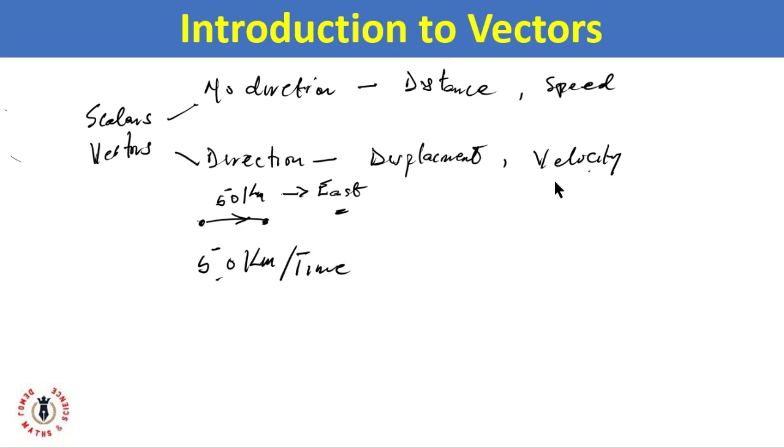While speed might measure the rate of change of distance with respect to time, velocity will mention the rate of change of displacement with respect to time. Another example we could be thinking about is mass, and for vector quantity we'll be thinking of it in terms of weight, because here we're talking about the mass in a particular direction.